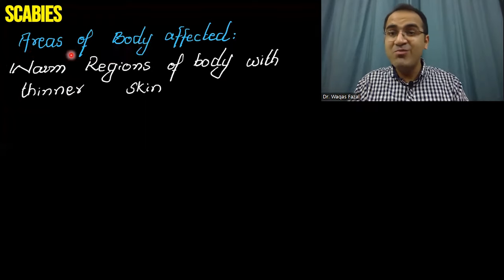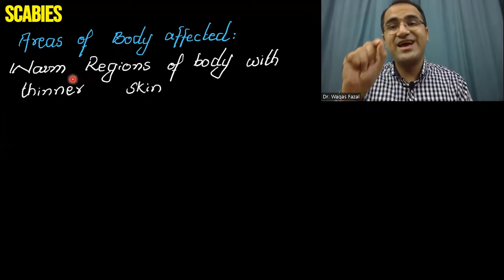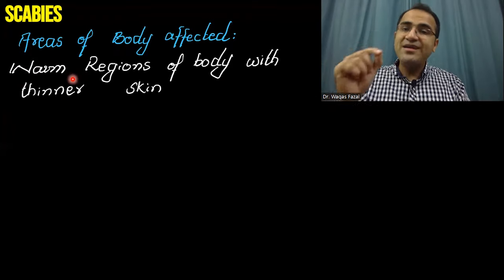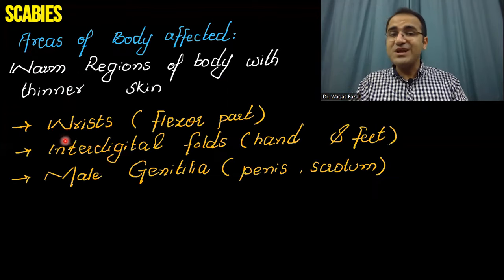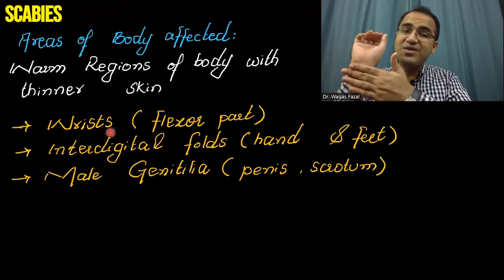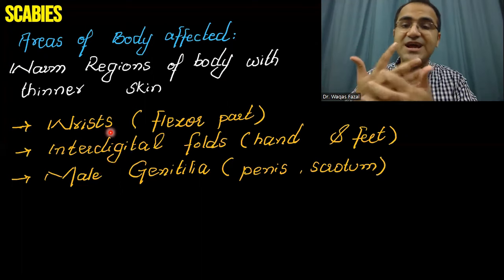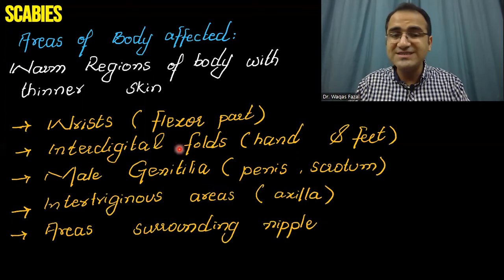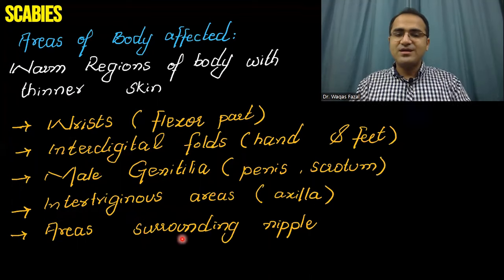The areas mainly affected are the warm regions of the body with thin skin, since thin skin is easy to penetrate and warm temperatures are more favorable for scabies. These include the wrists (flexor parts), interdigital folds, male genitalia (penis and scrotum), and intertriginous areas like the axilla — all areas with thin, warm skin.